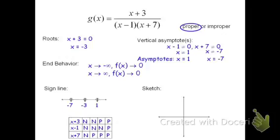In the first interval, we have negative times negative times negative — three negatives — which multiplies to be negative. So the first interval from negative infinity to negative 7 is negative. The next interval has two negatives and one positive; two negatives multiply to be positive, so the second interval is positive. The third interval has only one negative, so it's negative. The last one has three positives, which is positive. Note that it will not always go negative, positive, negative, positive — that's why we use the table to check.